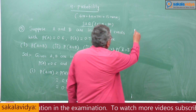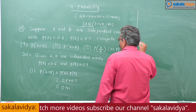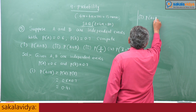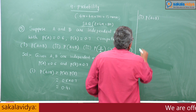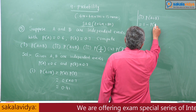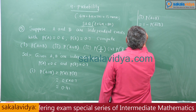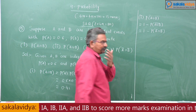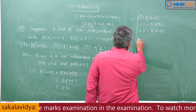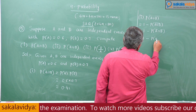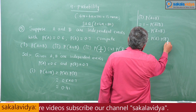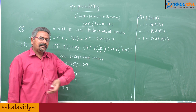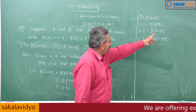Second one: P(A union B). This can be written as 1 minus P(A union B whole bar), which is 1 minus P(A bar intersection B bar) by De Morgan's law. This can be written as 1 minus P(A bar) into P(B bar), since if A and B are independent events, their complementary events are also independent, so we apply the multiplication theorem.